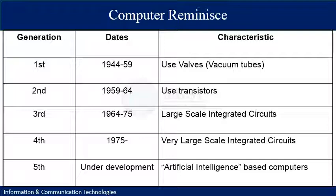The third generation came after the second and involved large-scale integrated circuits, which are used in current computers. The third and fourth generations are quite amalgamated because in the fourth generation large-scale integrated circuits were also used, but the definition expanded to very large scale. The current fifth generation of computer science is under development and focuses on intelligent computers that can make decisions on their own without human support.